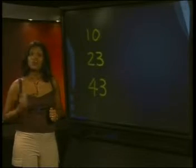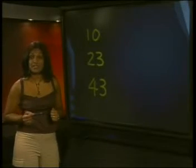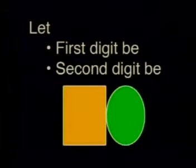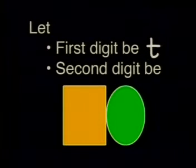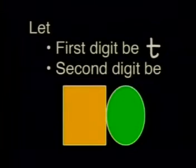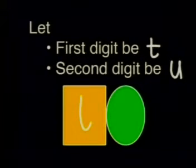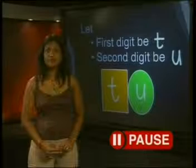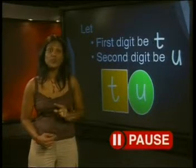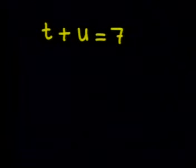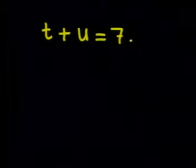But back to the question. We are looking for a two-digit number, so this means that there are two digits that are unknown, even though there's only one whole number. Let's call the first digit T because it represents the tens column, and we'll call the second digit U because this represents the units. This means that the number looks something like T U. The sum of the digits is 7, so we can write T plus U is equal to 7. This is the first equation that we can use.